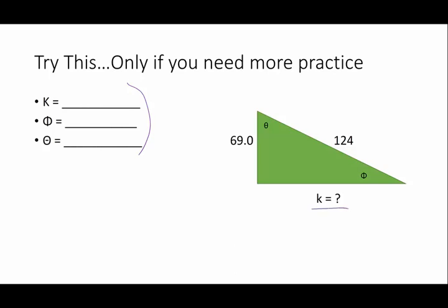When I did this, for K, I got 103. For Phi, I got 33.8. And for theta, I got 56.8.